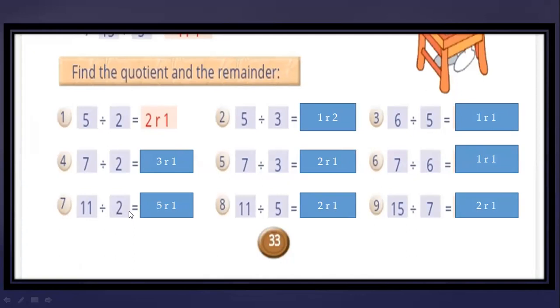11 divided by 2 equals 5 remainder 1. 11 divided by 5 equals 2 remainder 1. 15 divided by 7 equals 2 remainder 1.